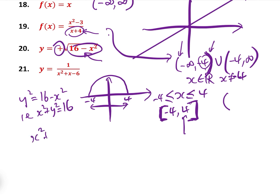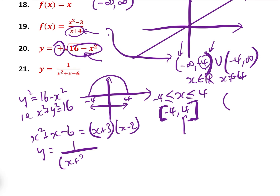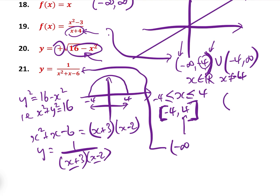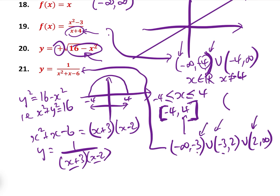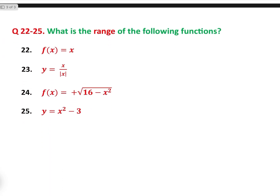Question 21: factorize the denominator — x² + x − 6 equals (x + 3)(x − 2). So the function is 1 over (x + 3)(x − 2), meaning x cannot take the value minus 3 or 2. The domain in set notation is (−∞, −3) union (−3, 2) union (2, ∞), using curved brackets because minus 3 and 2 are excluded.